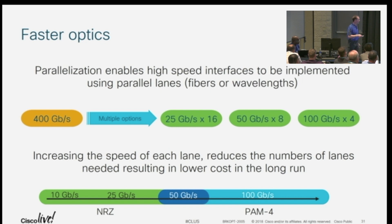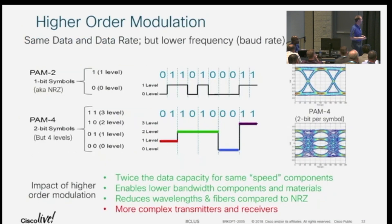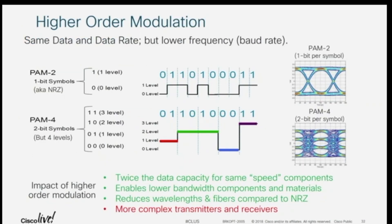But once you get above this, most people believe that both for optics and for electronics, PAM4 is the right technology. To explain PAM4 in a simple way: NRZ is just a simple setting of one and zero, one and zero, and you end up with these eye diagrams. When you overlay all the bit patterns together you get these nice eye diagrams, and making a decision between a one and zero is how much space there is in between the two.